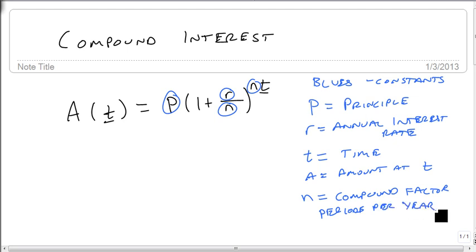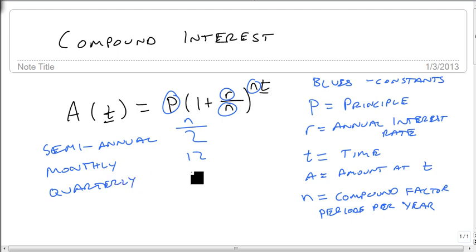Some important ones: if we're semi-annual, that's 2 times per year, so n is 2. If we're monthly, n is 12 because we do it 12 times a year. If we're quarterly, n is 4, because that's 4 times per year. And for this book, if we're daily, we're going to do it 360. We're going to just assume 30-day months.